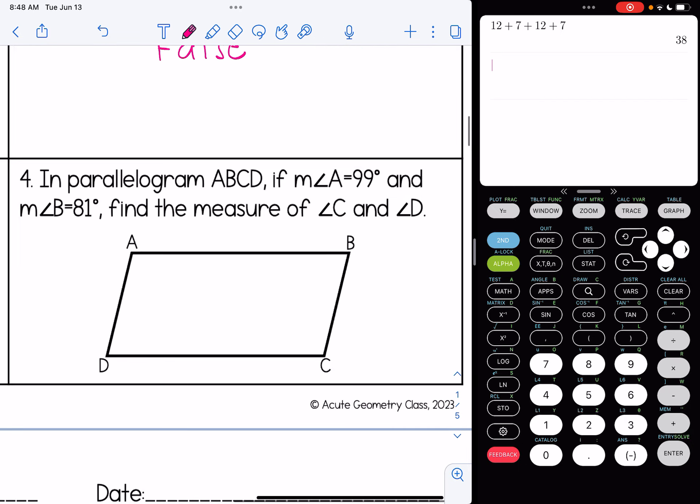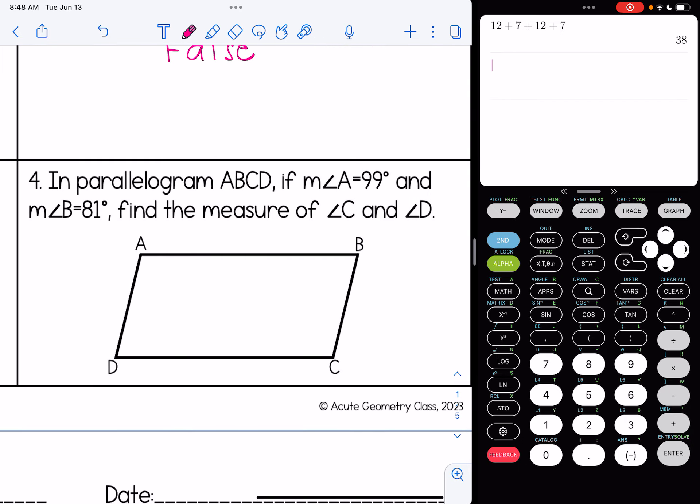Number four, in parallelogram ABCD, if the measure of angle A is 99, I'm going to fill that in, angle B is 81. Find the measure of angle C and angle D. Well, we said before that in a parallelogram, the opposite angles are congruent. So C must be 99 and D must be 81. This also fits the trapezoid property that same side interior angles are supplementary. For instance, these two are same side interior angles and they are supplementary here, meaning they add up to 180.